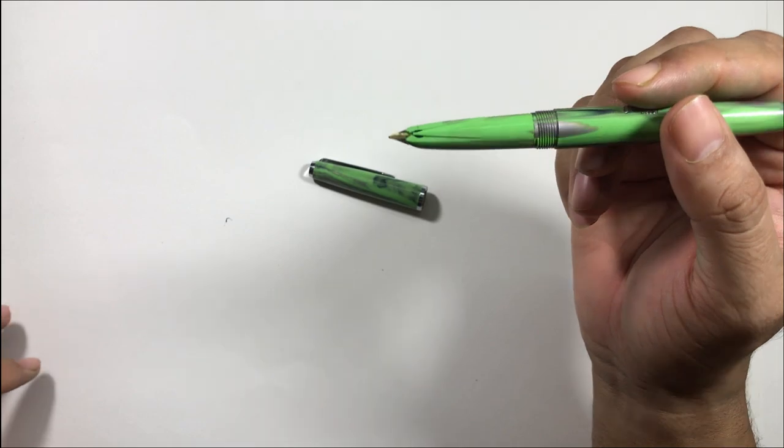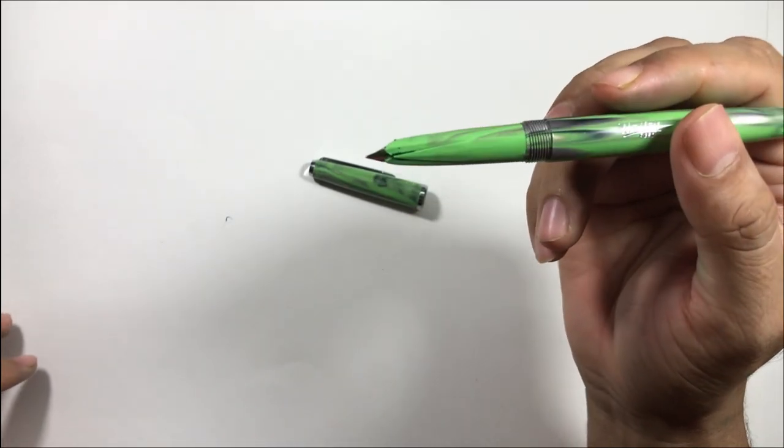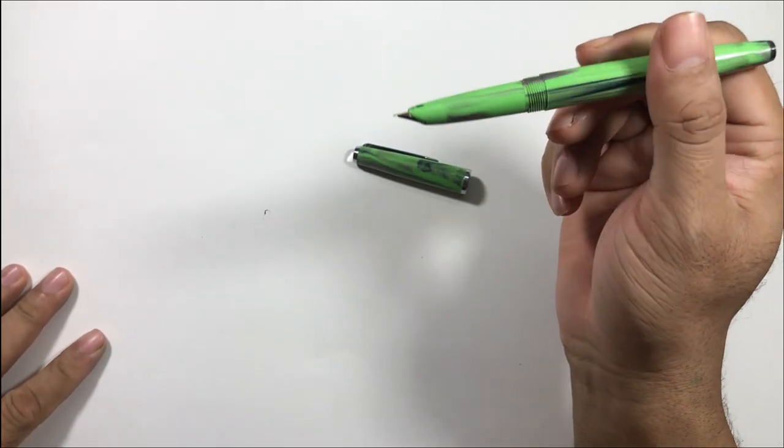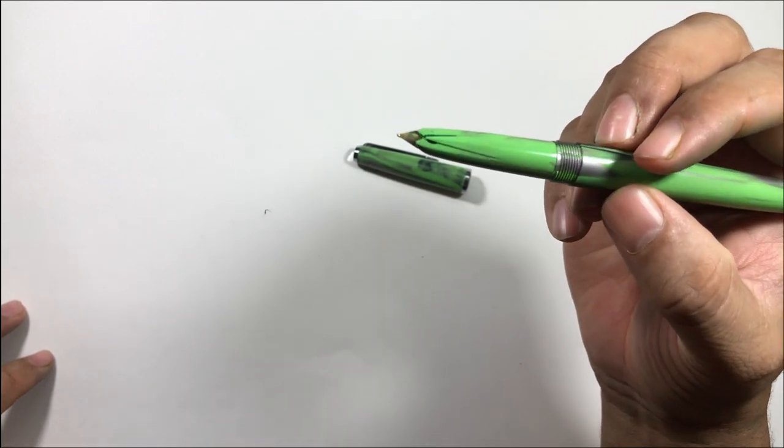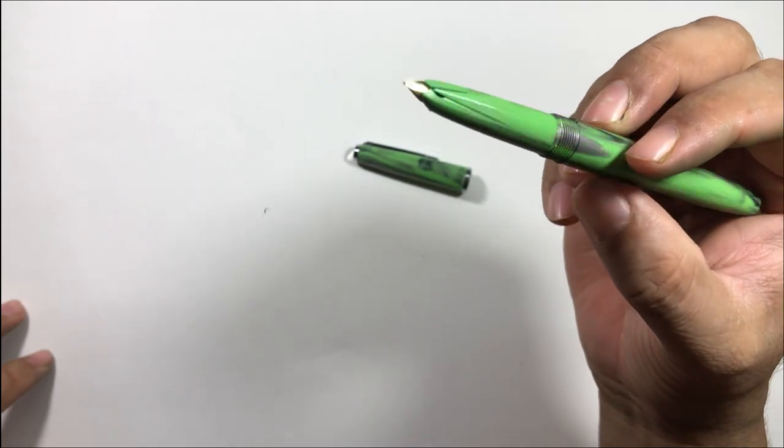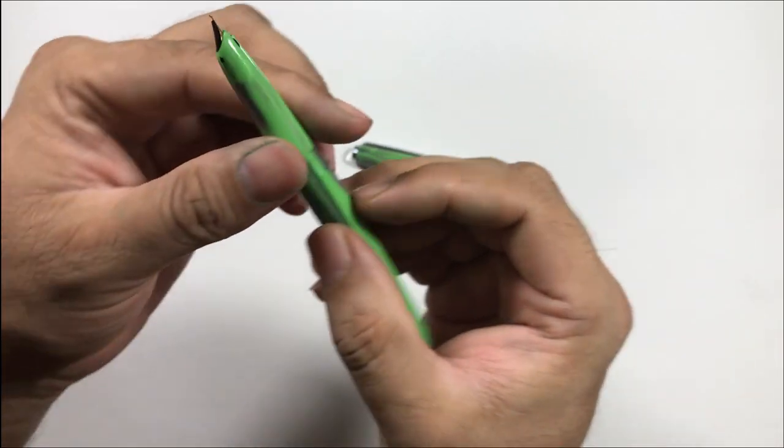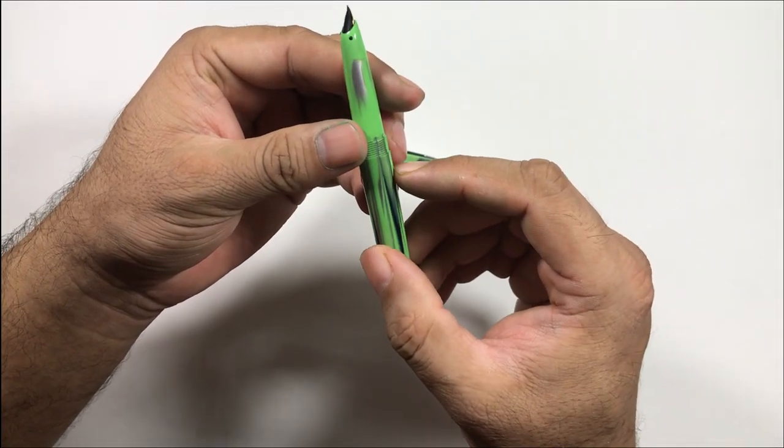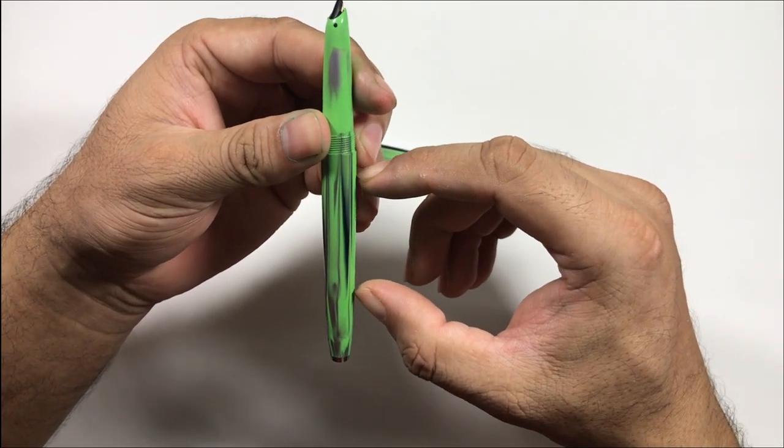It has a semi-hooded nib, not entirely hooded but semi-hooded. The nib is steel and it is fine point. The feed I think is ebonite. Being an eyedropper, it takes a decent amount of ink. You can fill it till here and it can take around two milliliters of ink.